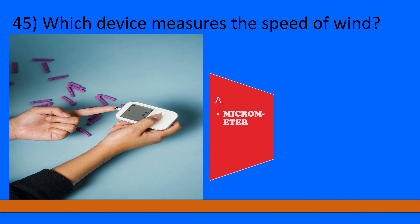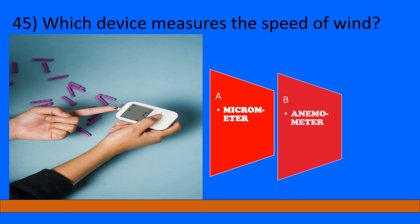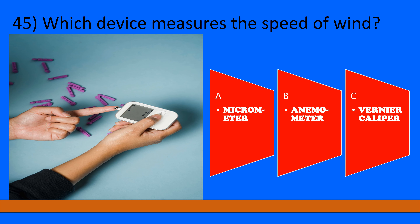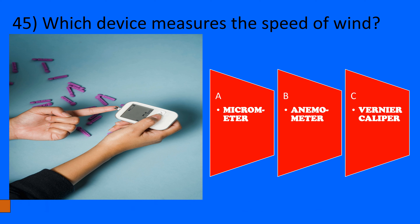Which device measures the speed of wind? A: Micrometer, B: Anemometer, C: Vernier Caliper. The correct option is B, Anemometer.